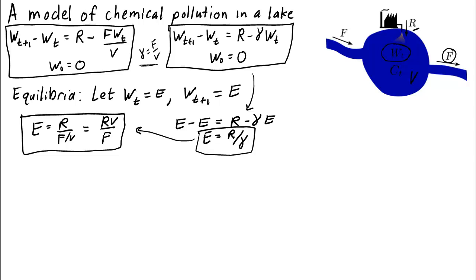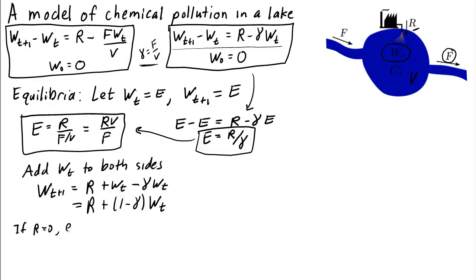Can we solve this equation? Let's add w sub t to both sides of our dynamical system in the form involving gamma, and we get that w t plus one is equal to r plus w sub t minus gamma times w sub t. Factoring, we get r plus one minus gamma times w sub t. In each time step, we multiply times one minus gamma and then add r. We know what to do if r were equal to zero, then we would have exponential growth or decay. Well, in this case, it's actually decay, since the quantity one minus gamma is less than one.